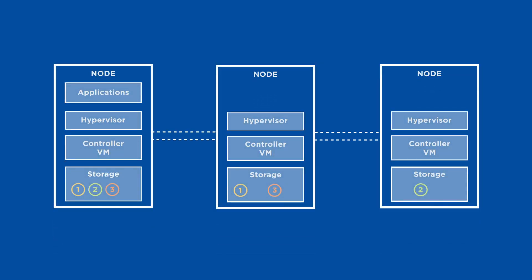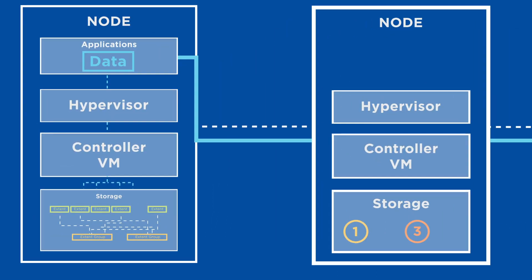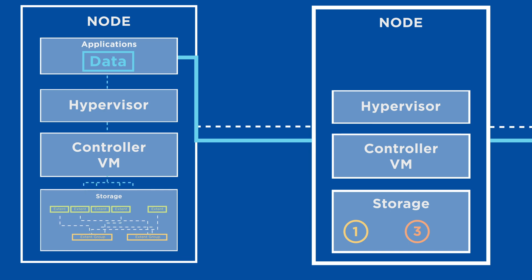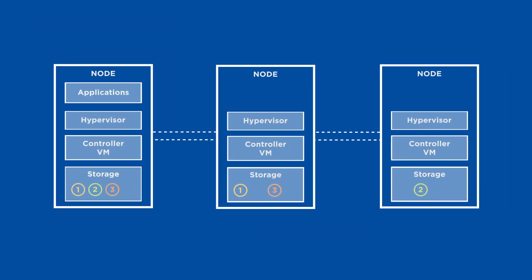That's why knowing how data and metadata is structured and stored in Nutanix AOS becomes important. Data is efficiently distributed across the entire cluster in small chunks called extent groups. To keep track of these small pieces of data, Nutanix uses a distributed consistent key-value store as its metadata store. This makes data placement for every new write dynamic and flexible.